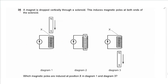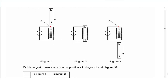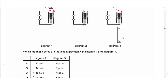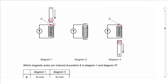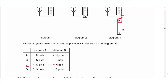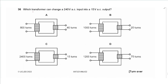Question 35: a magnet is dropped through a solenoid, inducing magnetic poles at both ends. In diagram 1, the magnet approaches with an S pole, so the induced pole at X (top) is S to oppose the motion. In diagram 3, a N pole is moving away; to attract it back, an S pole is induced at the bottom, making the top end N. The answer is C.